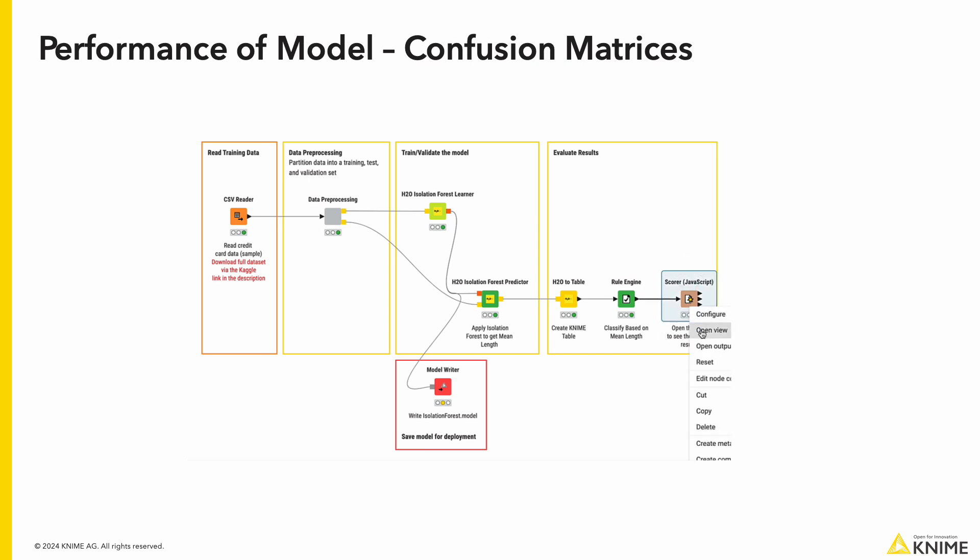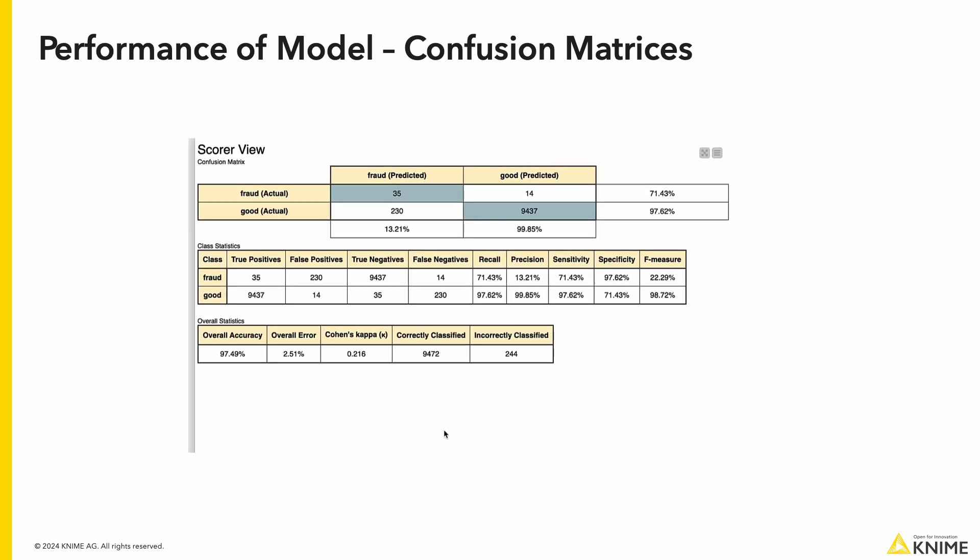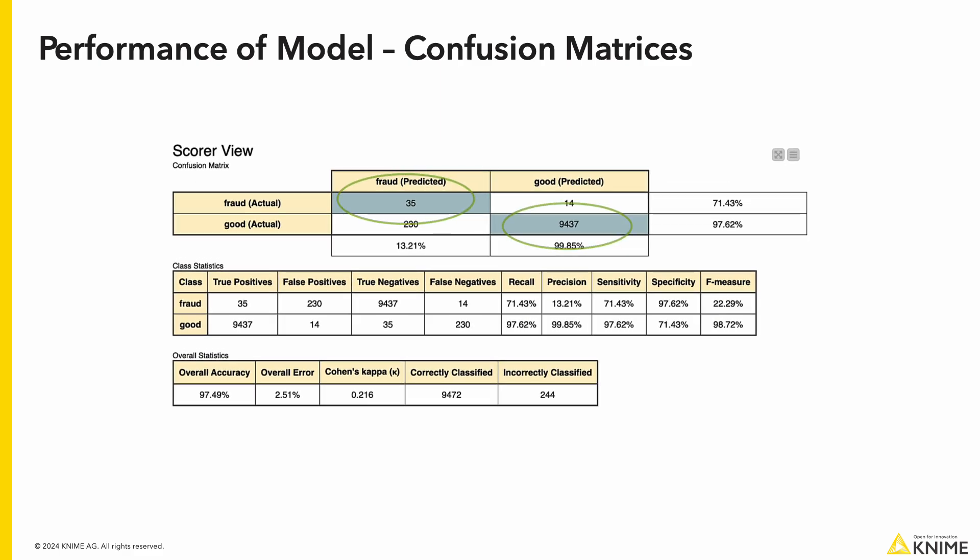If we go into the score node at the end, we have a confusion matrix that shows the overall performance of the model. We can see the correctly classified transactions and the mistakes. At the bottom, we can see an accuracy of around 97.5%, which is on par with some of our better methods.